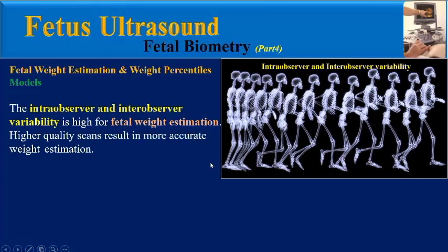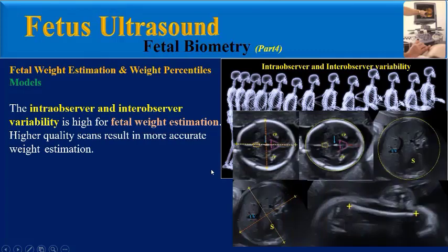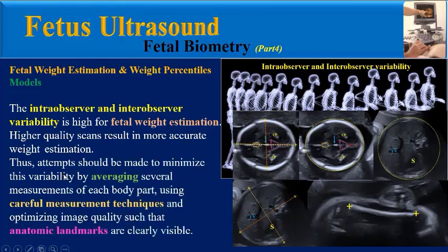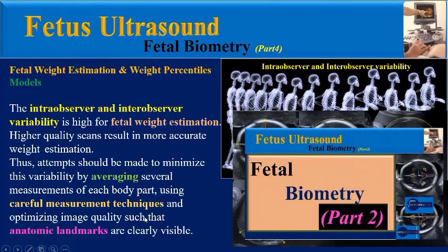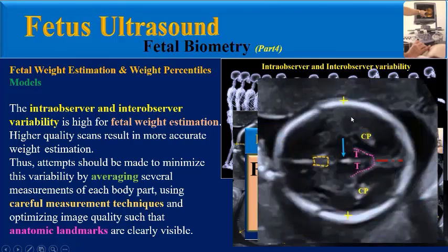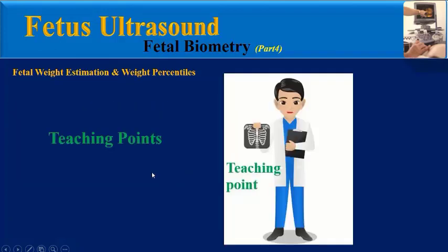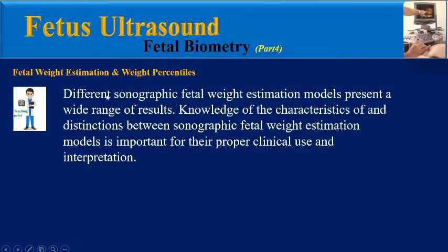Higher quality scans result in more accurate weight estimation. Attempts should be made to minimize variability by averaging several measurements of each body part, using careful measurement techniques as explained in video Part 2, and optimizing image quality such that anatomic landmarks are clearly visible.